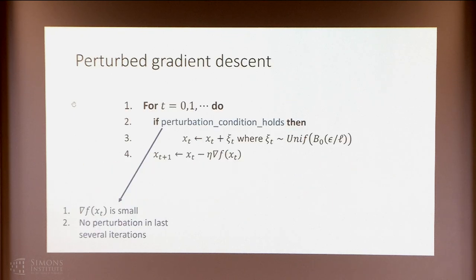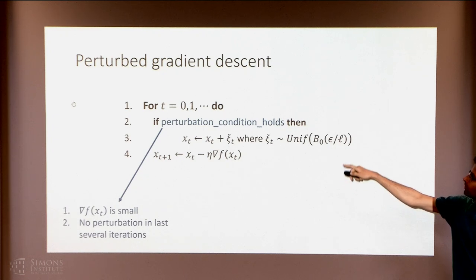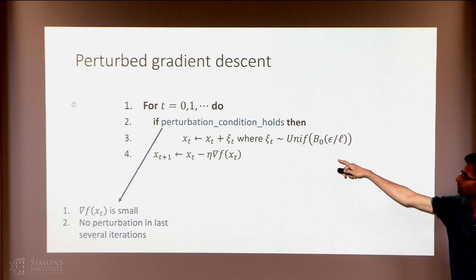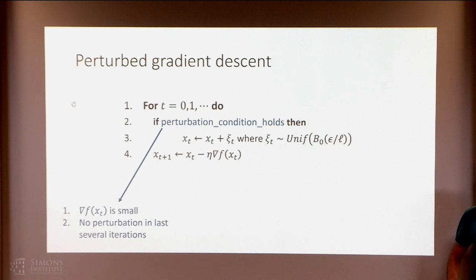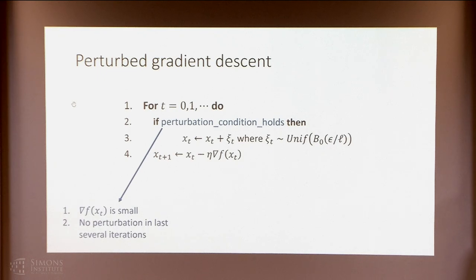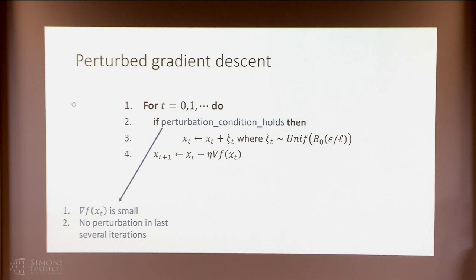What is the perturbed gradient descent algorithm? At a high level, it keeps doing gradient descent and once in a while adds some perturbation. It keeps doing gradient descent on step four, and whenever the perturbation condition holds, it adds noise in step three. The perturbation condition kicks in when the gradient at the current point is small and we haven't added noise for a while. So the algorithm starts with gradient descent; when the gradient becomes small, we add a little noise, then continue gradient descent for a while before repeating the procedure.